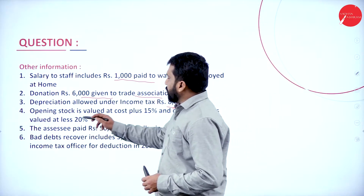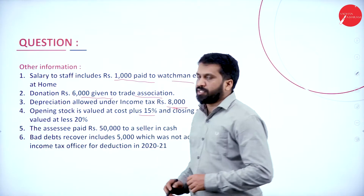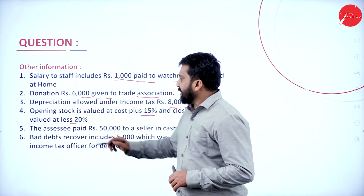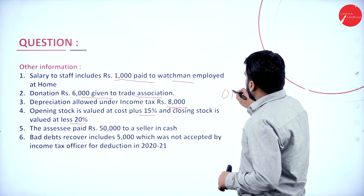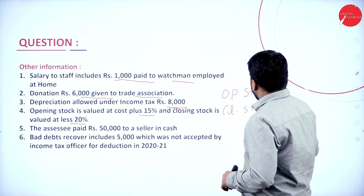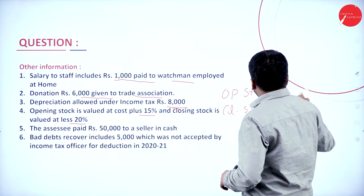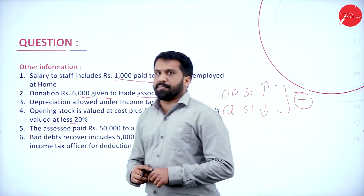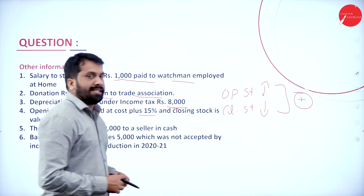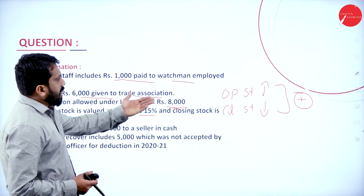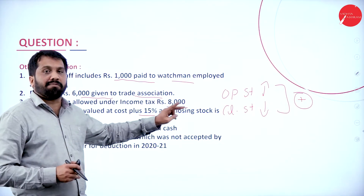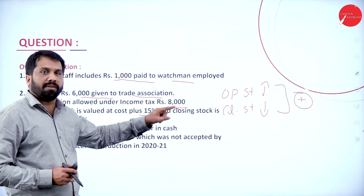Then, opening stock valued at cost plus — cost plus means increased. And closing stock is valued less. Remember: opening stock increased, closing stock decreased — you have to take it as a disallowed item, plus. On the other hand, opening stock decreased, closing stock increased — then it will be minus, an allowed item.